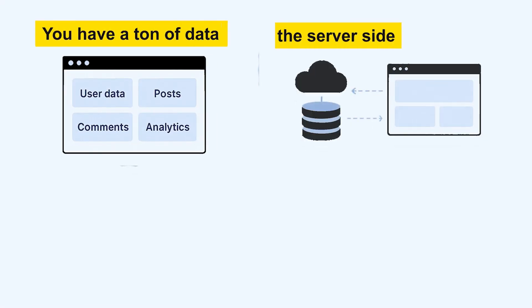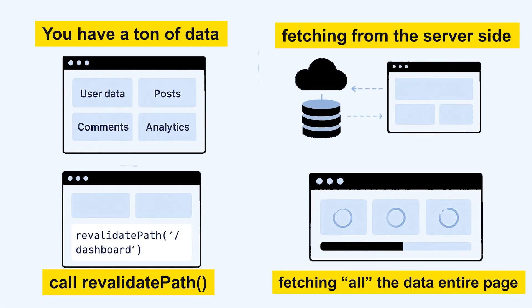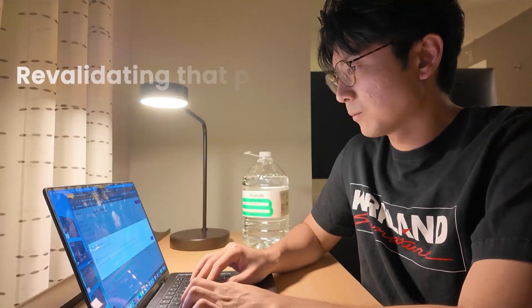Another thing that didn't feel like a great developer experience was the usage of revalidatePath within Next.js. It revalidates a path so it fetches a brand new set of data. A common use case: when I add a new piece of viral content, I call revalidatePath to refetch the entire list so the new entry appears at the top. But this felt really sluggish because you're fetching all data on that entire page. I know there's caching by tags and revalidating tags for more granular revalidation, but that didn't feel like the default behavior — you had to dive deeper into the docs to find it.